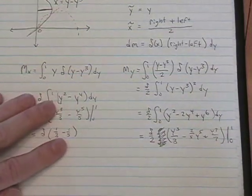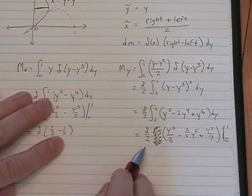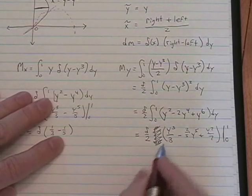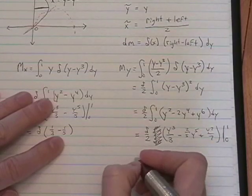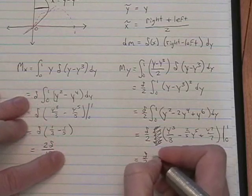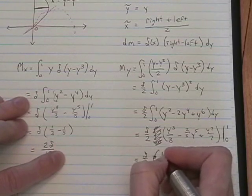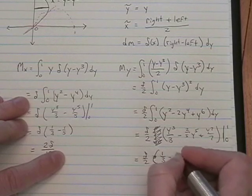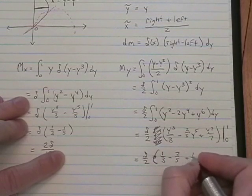Plugging in our a and our b, when you put in 0, these are gone. When you put in 1, you get delta over 2 times 1 3rd minus 2 5ths plus 1 7th.